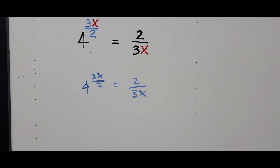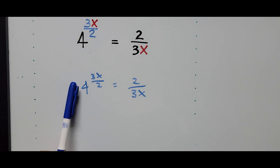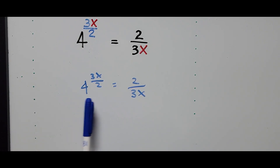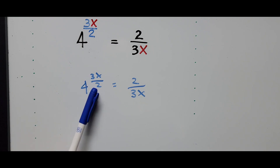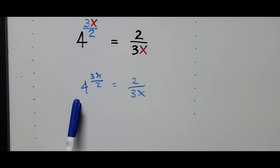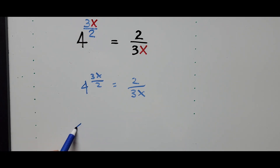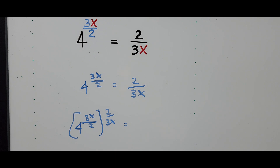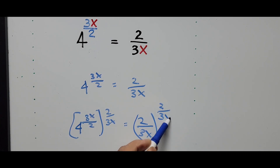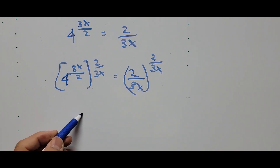From here, I would like to get rid of the variable x on the left side of the equation. The best way to do that is to raise the whole equation with the reciprocal of the power of 4 on the left side — exactly the reciprocal of this exponent. So the equation now becomes: 4 to the power of 3x divided by 2, raised to the power of 2 divided by 3x.